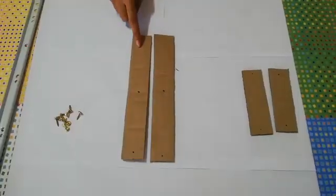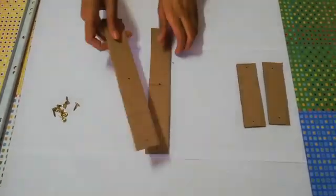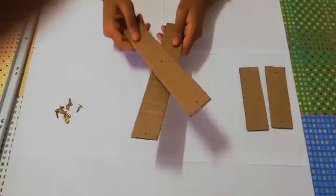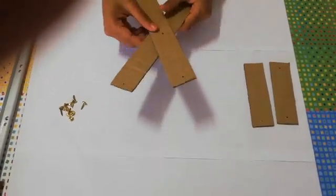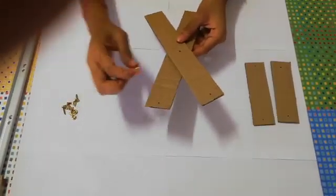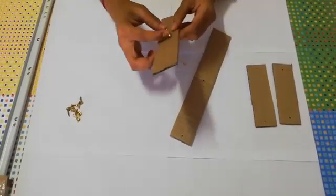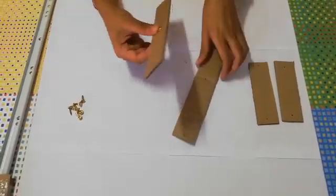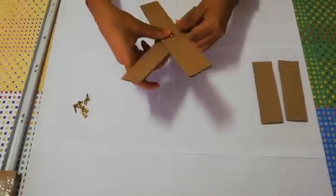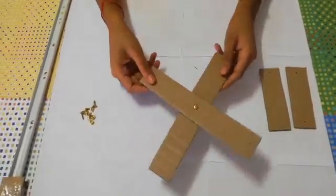Now you're going to take your two longest pieces of cardboard and put a paper fastener through the center holes and join the two pieces together. You're going to put it through the first hole and then attach it to the second one so that you get the two overlapping in a cross.